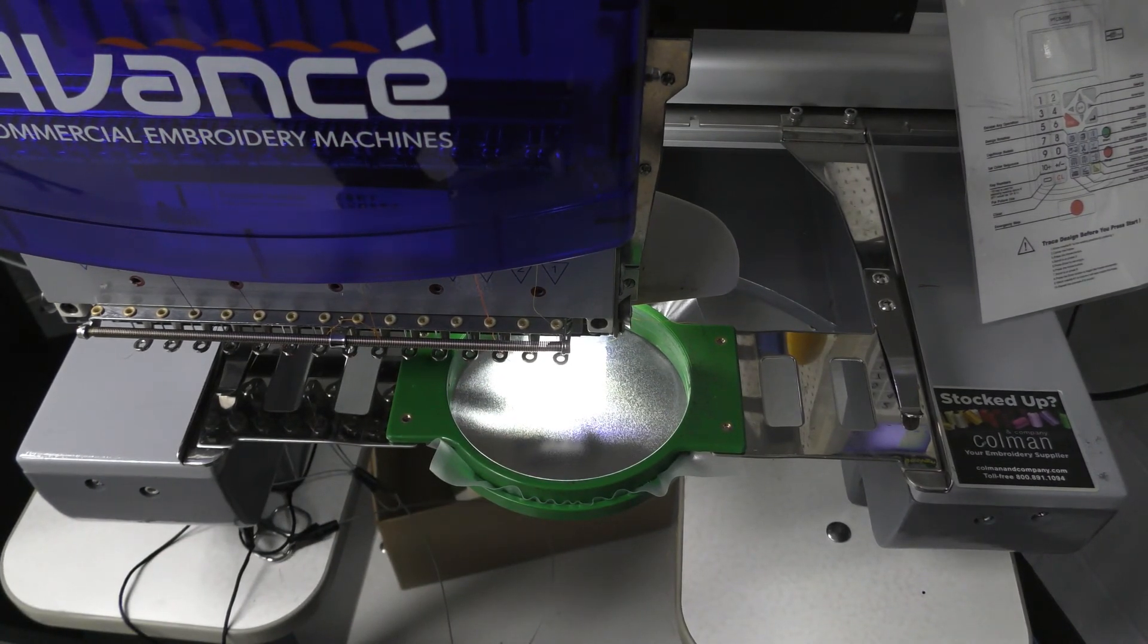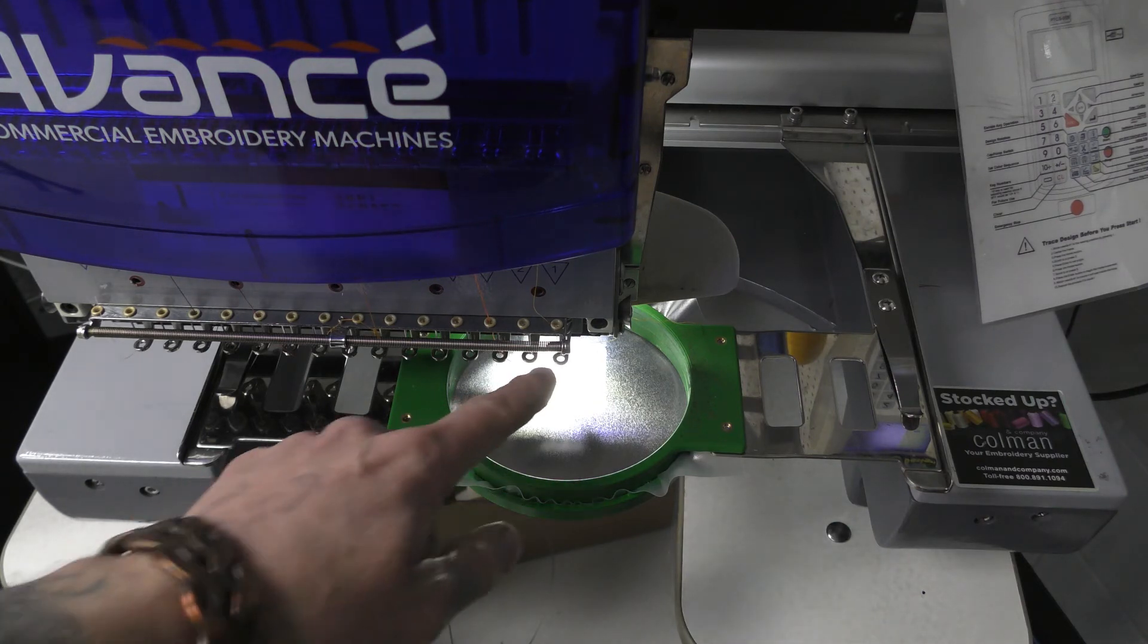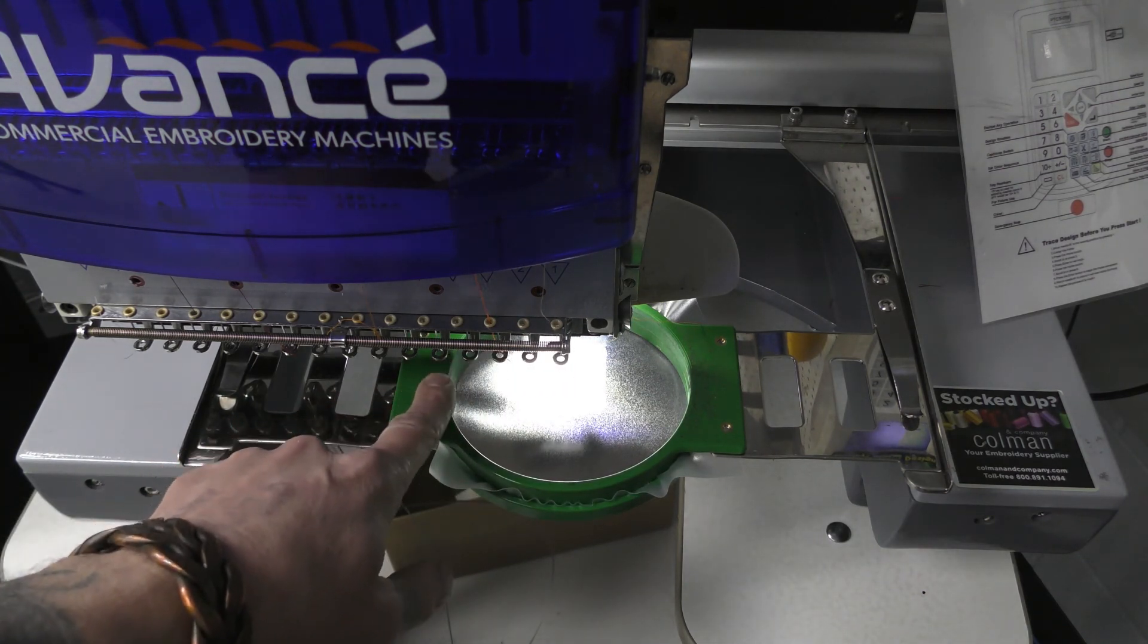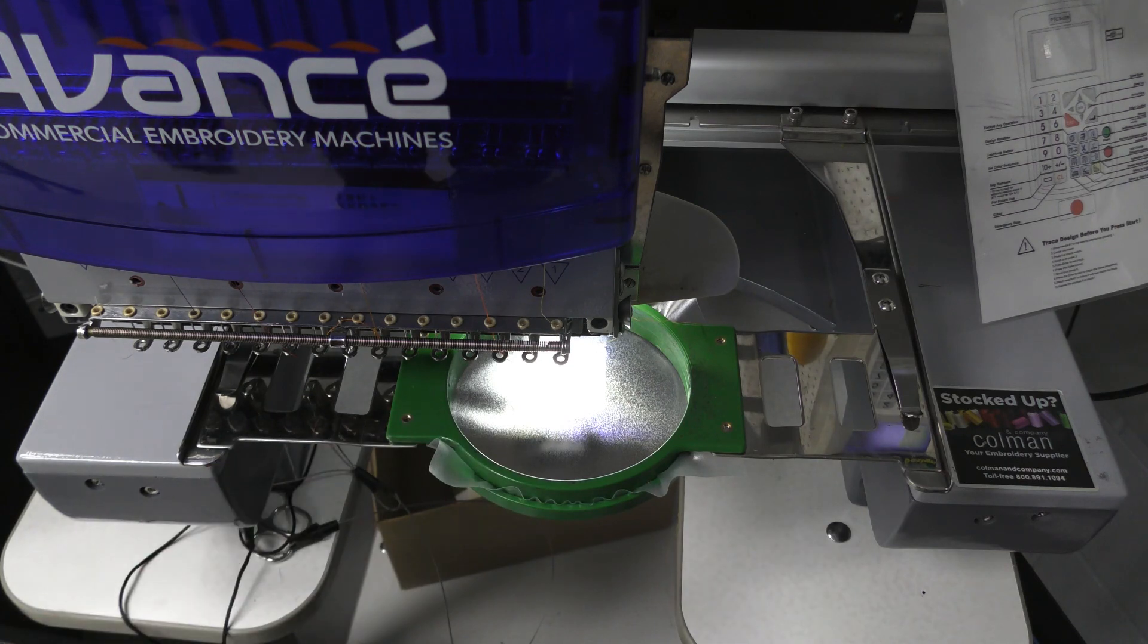Good. So that is running a contour check. It's very important that you run a contour check. If you do not, this needle will hit the green and break the needle. Not hard to replace, but it is very bad for the machine. So I hope you enjoyed running a contour check. Thank you.